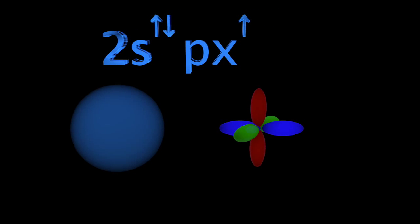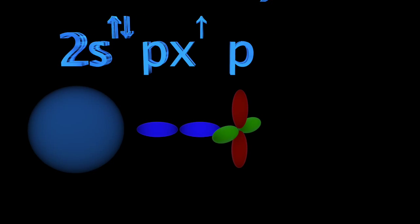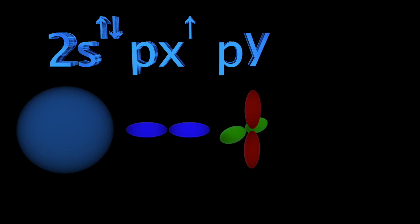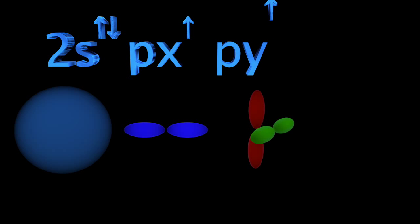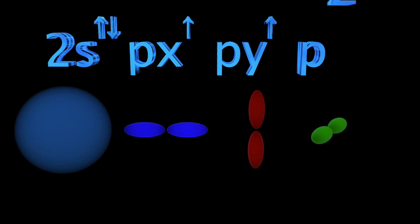Since P has three orientations—Px, Py, and Pz—and we have just two electrons, Pz will remain empty at this moment.